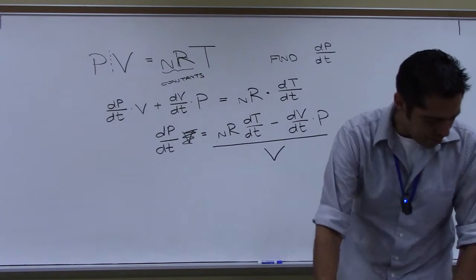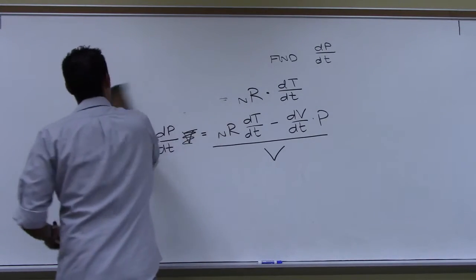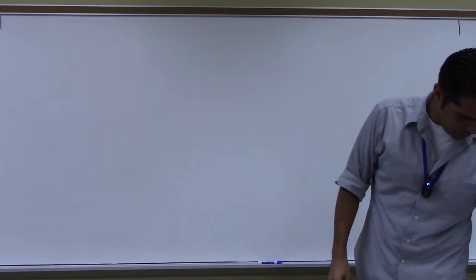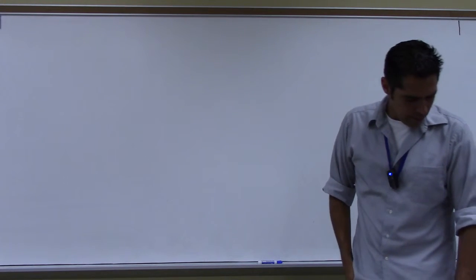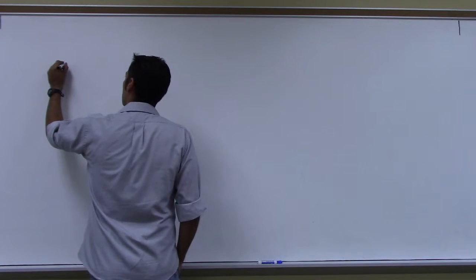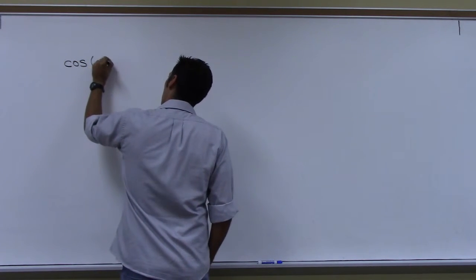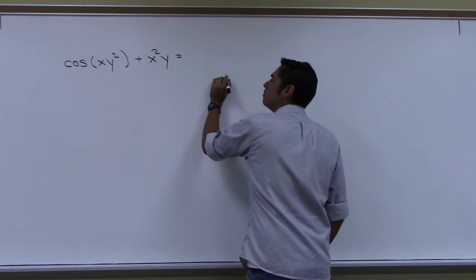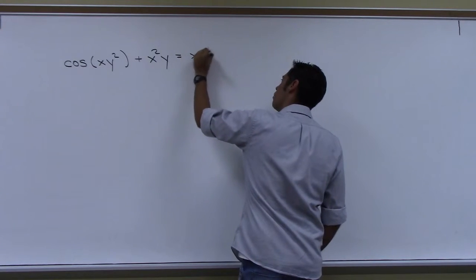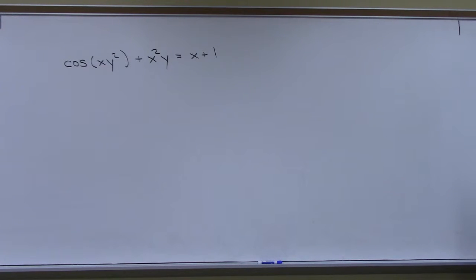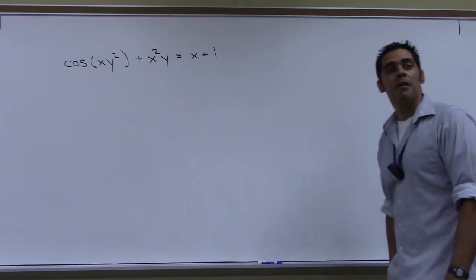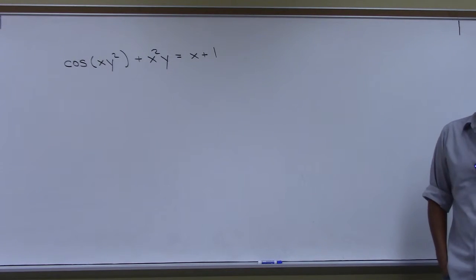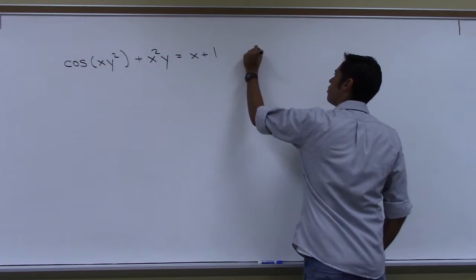Let's do one more example — maybe two more. Let's do one that has some trig in it. How about cosine of xy squared plus x squared y equals x plus 1. The book says find dy/dx.